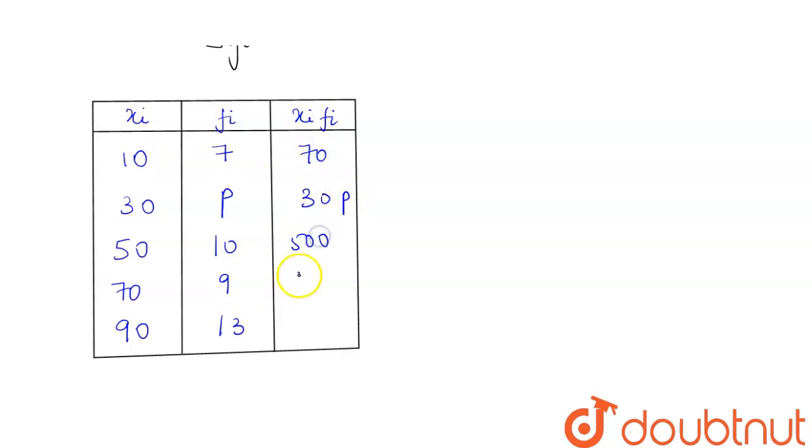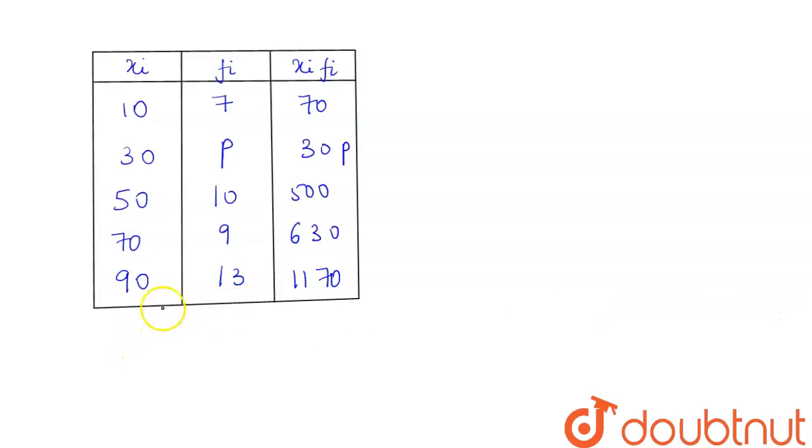Now we will find summation of fi which will be the sum of these terms, which is coming out to be equal to 39 plus p. And now we will find the sum of our xi into fi, which is equal to 2370 plus 30p.